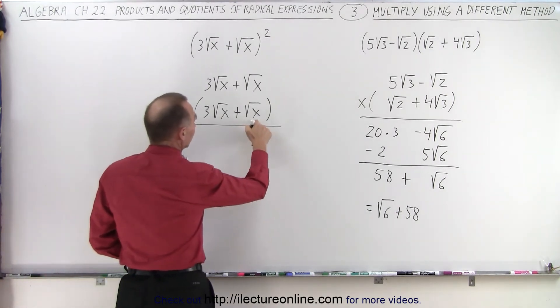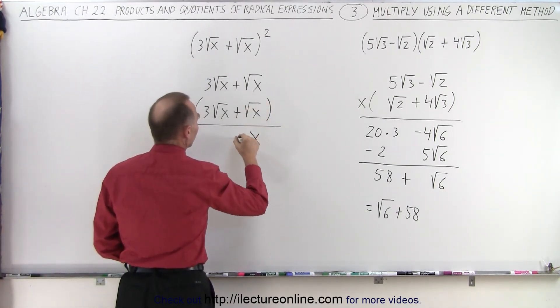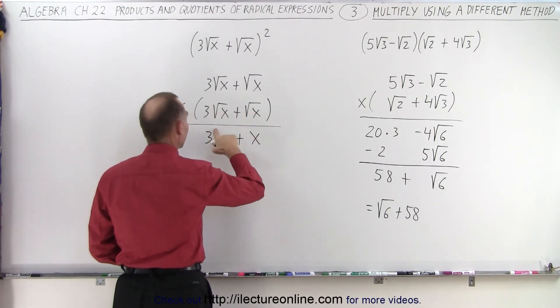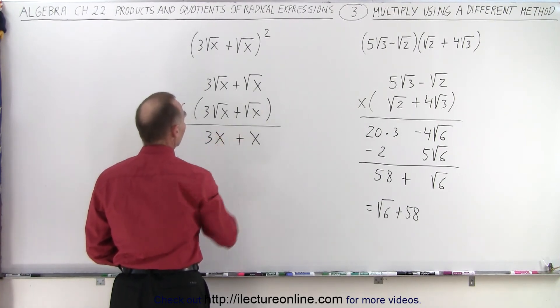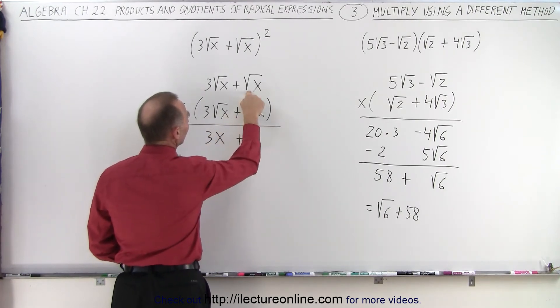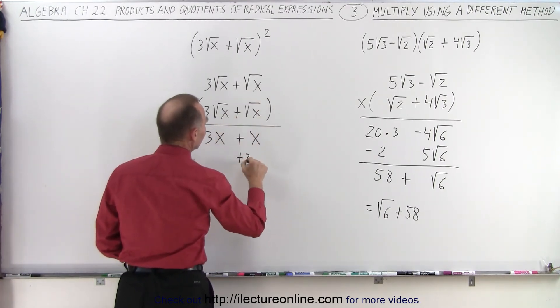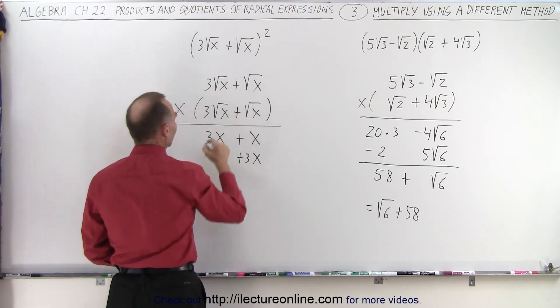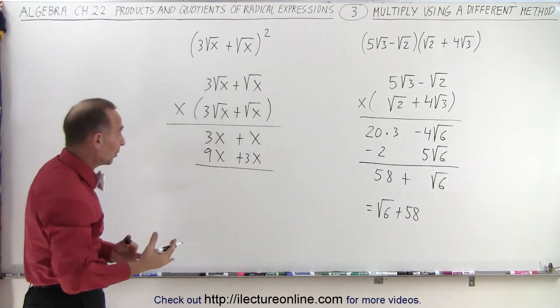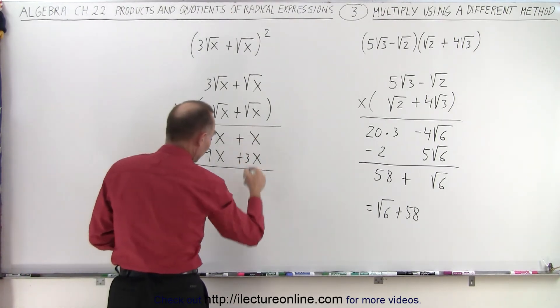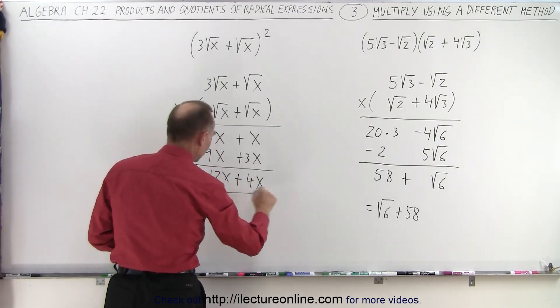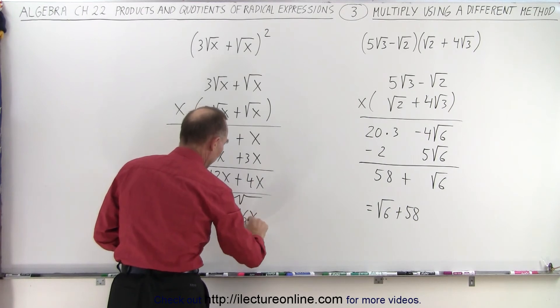So here we have square root of x times square root of x, which is simply x. Then 3 times the square root of x times the square root of x is simply 3x. Multiply these two together to get plus 3x, and this times this gives us plus 9x. Notice that we can simply add them together: 4x plus 12x. When we add them together, that gives us 16x.